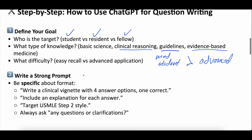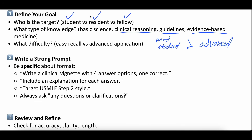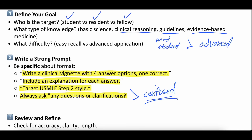When writing that strong prompt, be very specific about the format. For instance, if you want a multiple choice test, write: 'Write a clinical vignette with four answer options, only one correct. Include an explanation for each answer. Target USMLE Step 2 style.' That's how specific you can get. And at the end of the prompt, always put 'Do you have any questions or clarifications?' — because that's where it will ask you anything it's confused about, and you can clarify those things rather than it kicking out something confusing because it wasn't sure what you wanted.